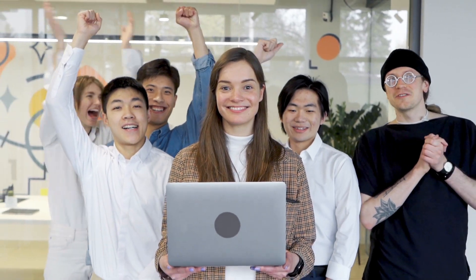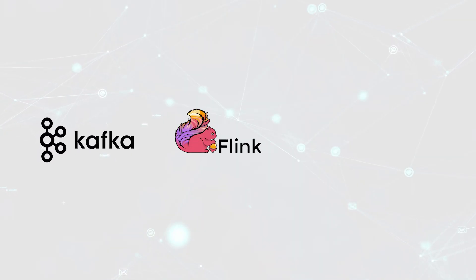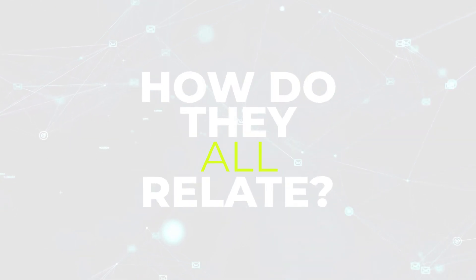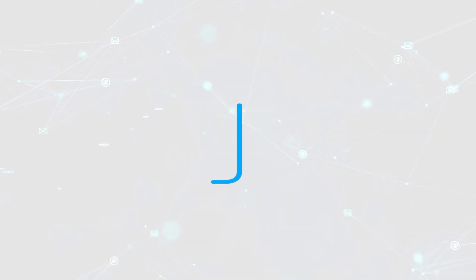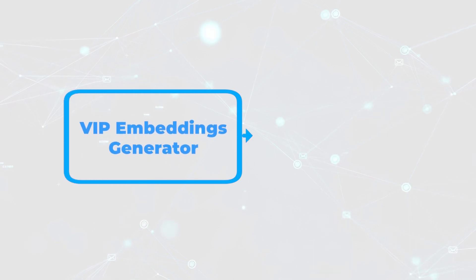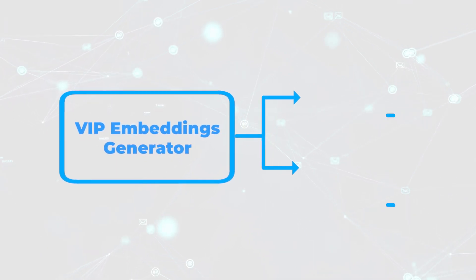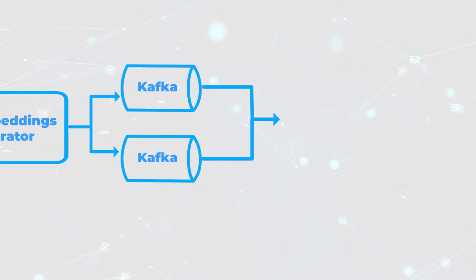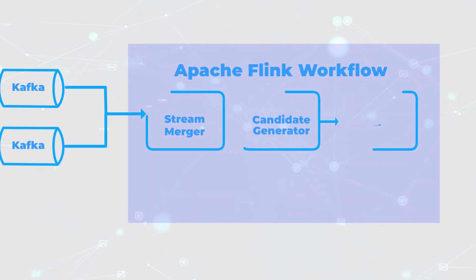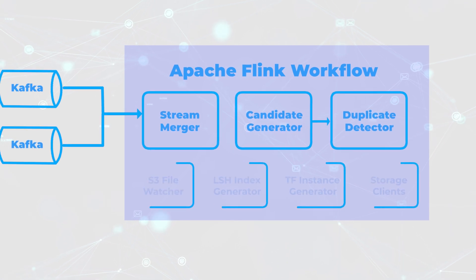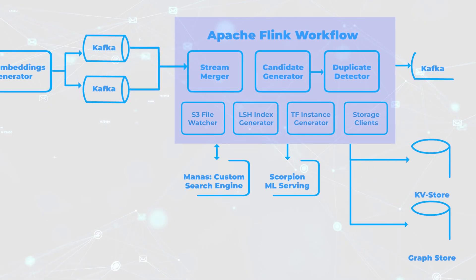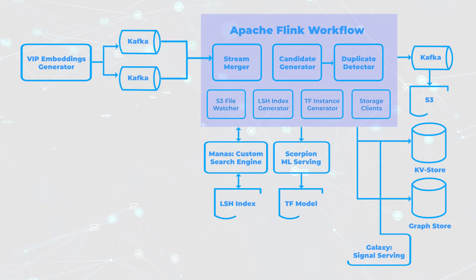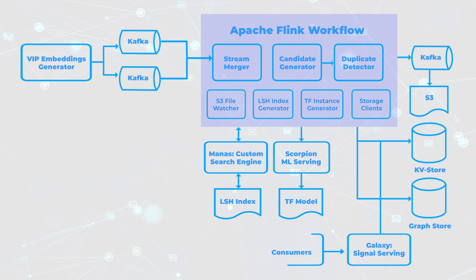There are so many moving pieces in this system — from Kafka, Apache Flink, RocksDB, and more. At a high level, the system flows as such: it starts with images that turn into embeddings, which then get processed and go to Kafka, and from Kafka to a Flink workflow. The outputs of this pipeline then go to downstream consumers such as Pinterest Feature Store, Galaxy, or custom graph storage systems such as Xen.